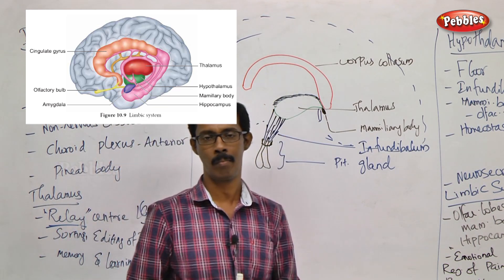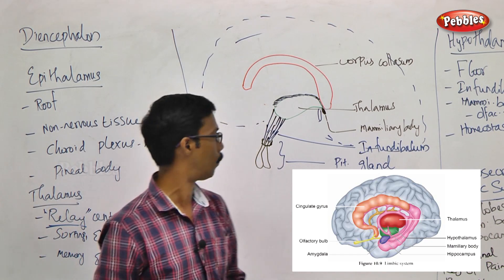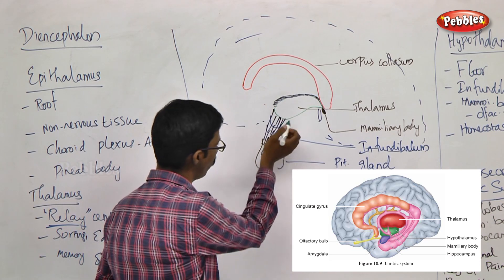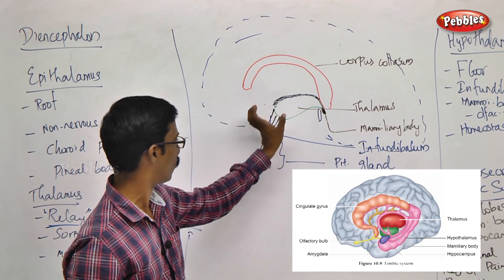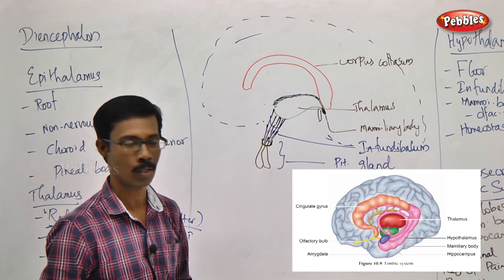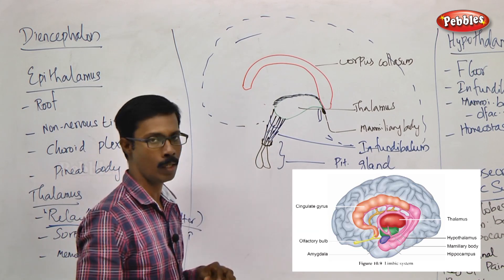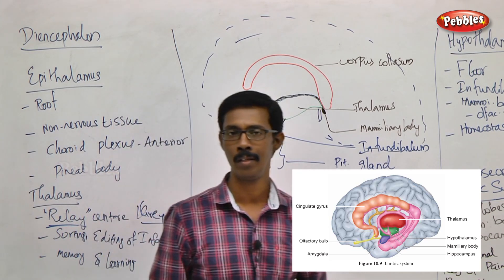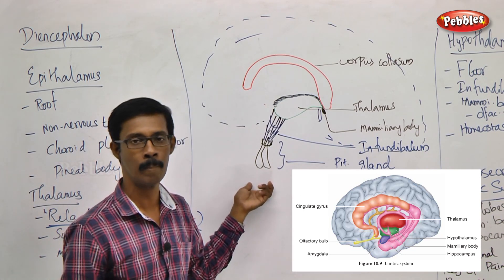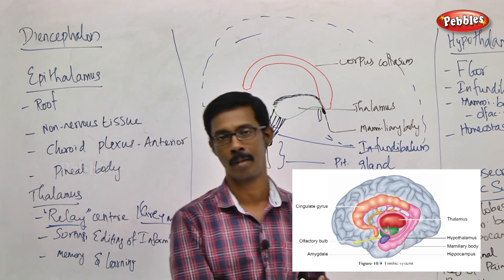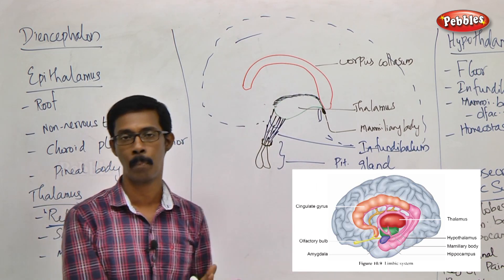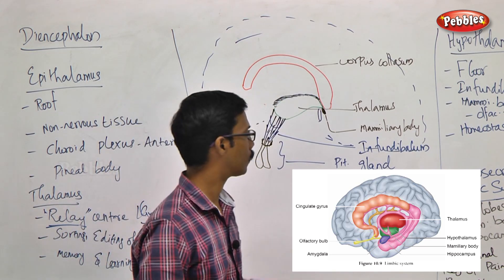Hypothalamus is connected to the Infundibulum, which is a funnel-shaped projector structure made of bundles of nerve fibers. The Infundibulum connects the thalamus — specifically the hypothalamus — with the pituitary gland. The pituitary gland has two bulk structures: one is Neurohypophysis and the other is Adenohypophysis. The pituitary gland is connected with the hypothalamus via the Infundibulum structure.